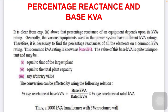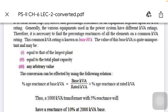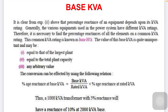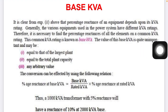The first quantity is the largest plant rating, the second is the total plant capacity, and the third is any arbitrary value. The conversion follows the equation: percentage reactance at base KVA equals base KVA divided by rated KVA, multiplied by percentage reactance at rated KVA.